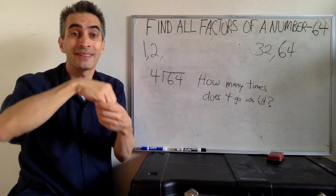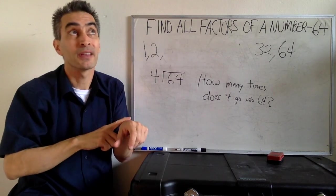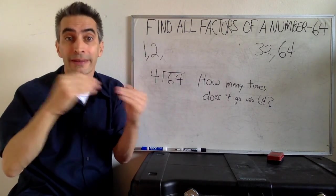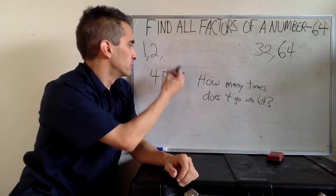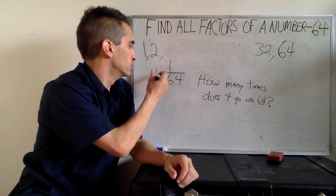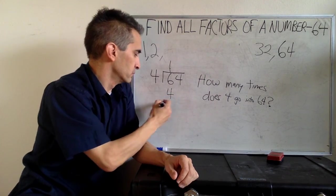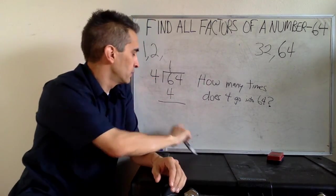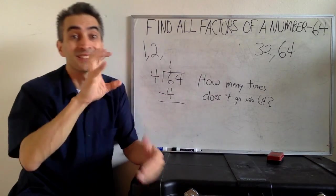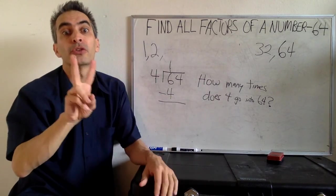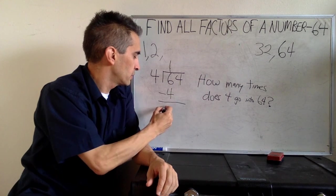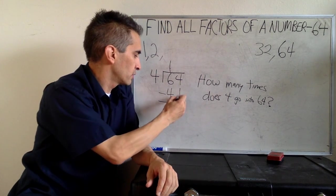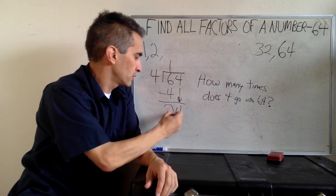Let's see. 4 goes into 6 how many times? 4 times 1 equals 4. Now what do we do? Subtract. 6 subtract 4. That's going to be 2.